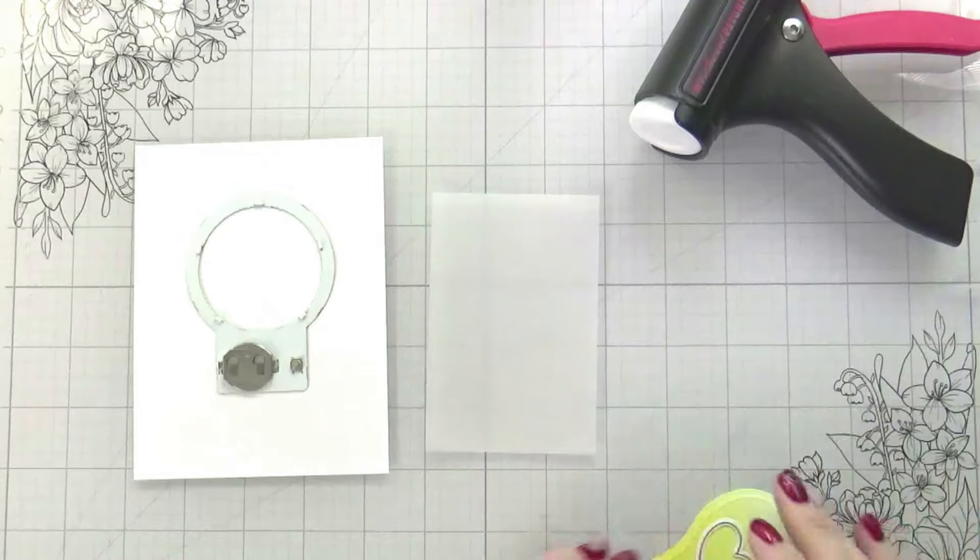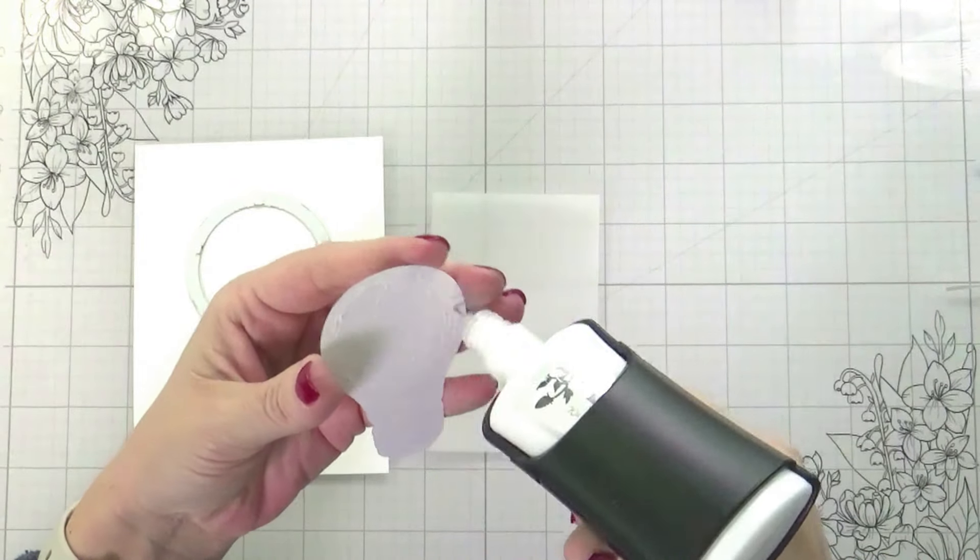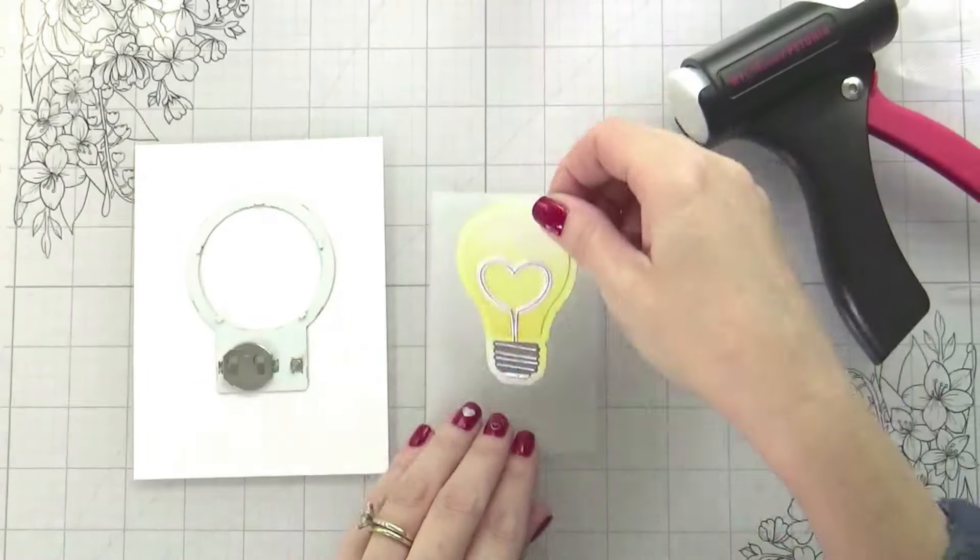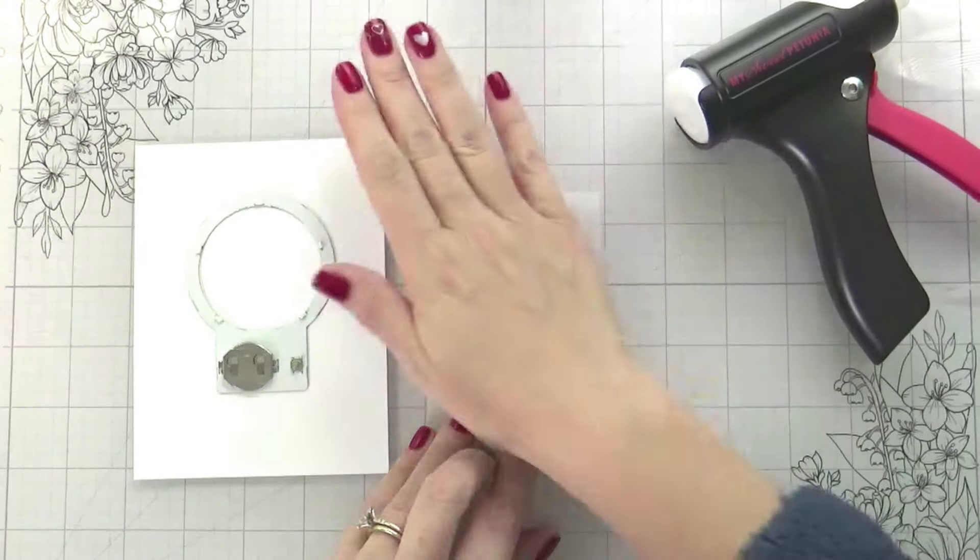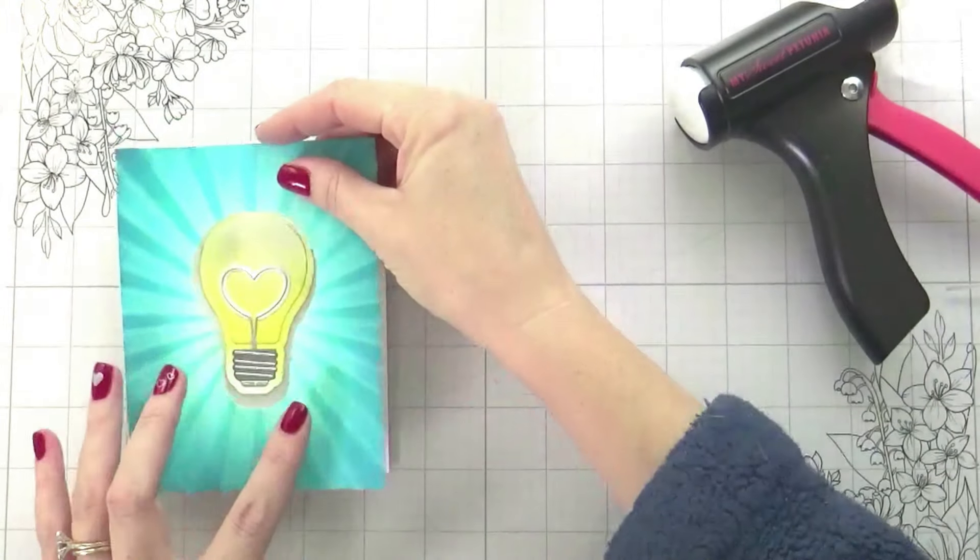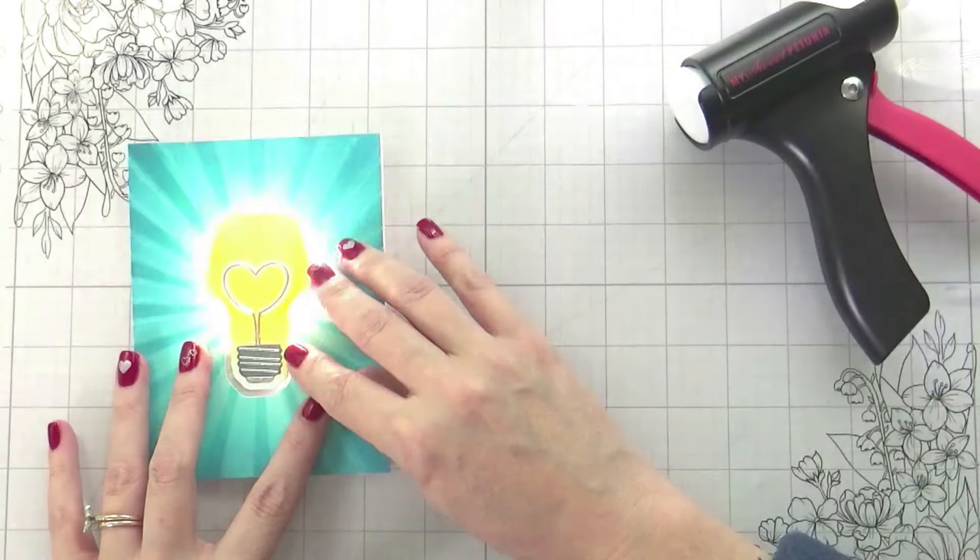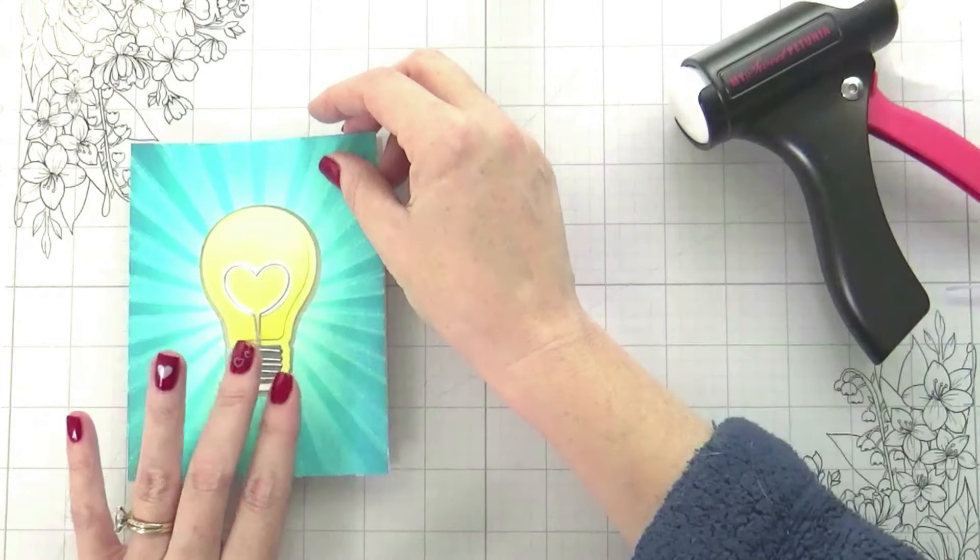Now here's that vellum. It's the same size as my acetate, it is four and a quarter by two and three quarters. I'm just going to glue my light bulb into the center. This is going to one, help hide my mechanism in that gap, and two, help diffuse the light so that it is brighter and it goes farther.